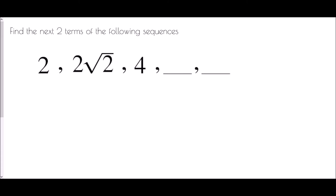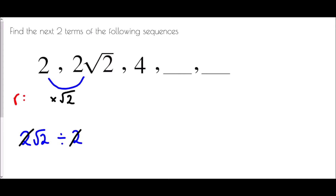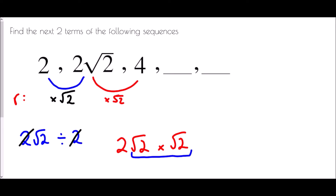For the next sequence we have 2, 2√2, and then 4. To continue the sequence we need to work out what we must have multiplied by. So I'm going to take 2√2 and divide it by the previous term, 2. The twos cancel, so we must have multiplied by √2. Our common ratio r is √2.